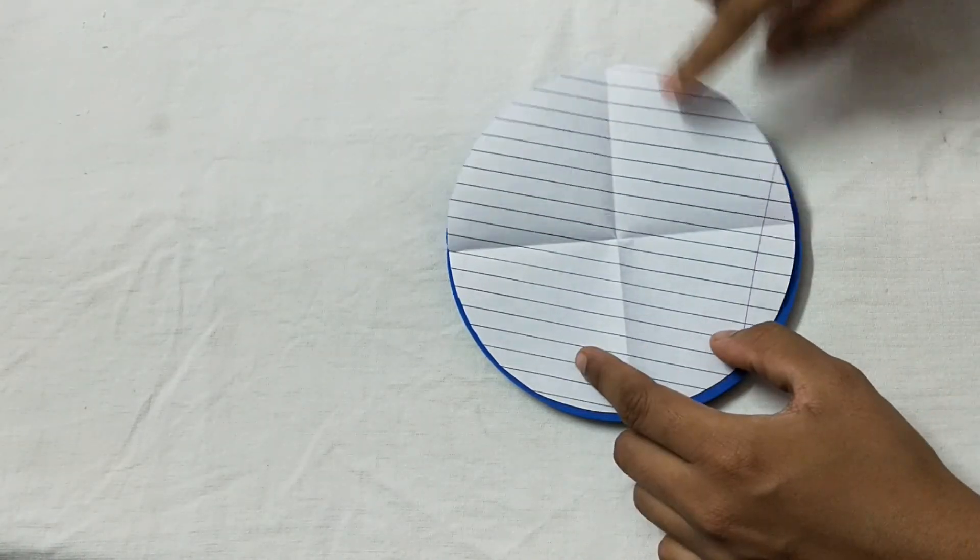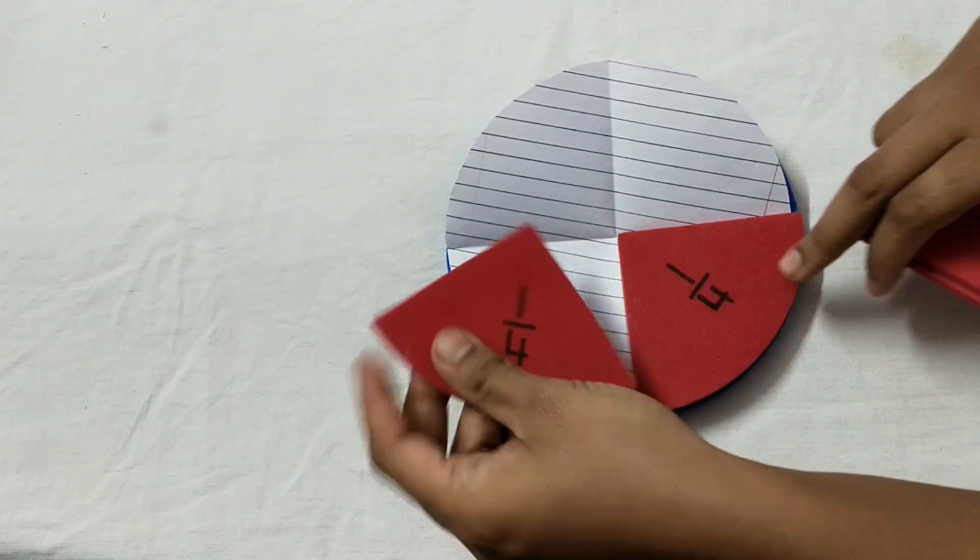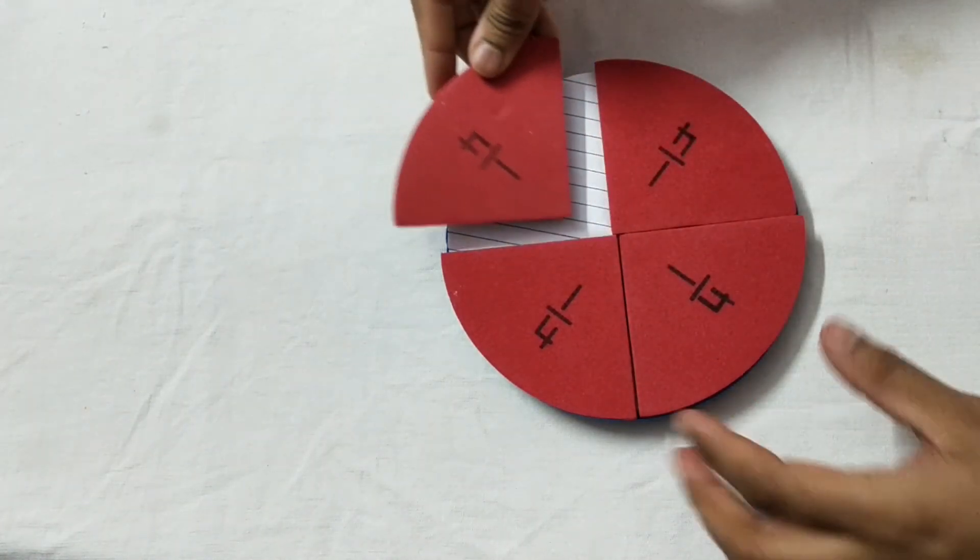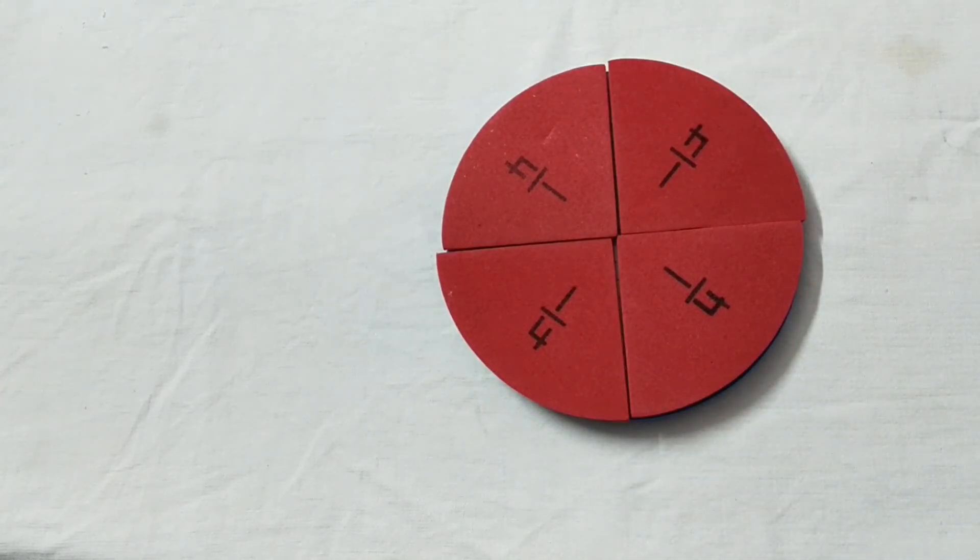One, two, three, and four. So you can see here, this one part is known as quarter and it is known as one fourth. Why it is known as one fourth? Because we divide one chapati into four equal parts, and when four equal parts join each other, it makes one full chapati.